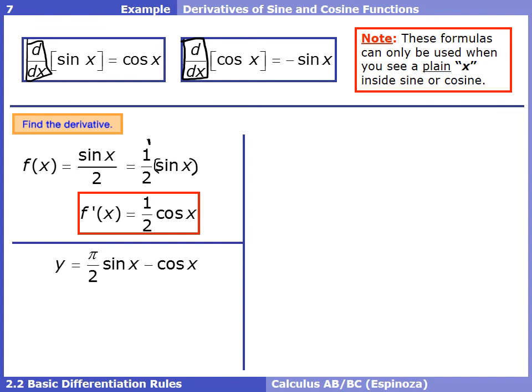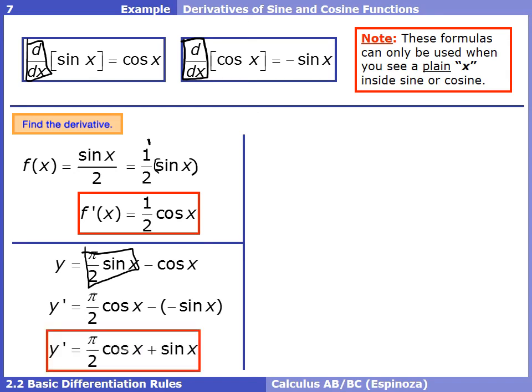For (π/2)sine x minus cosine x, we use both the sum/difference rule and the constant multiple rule. The derivative of (π/2)sine x is (π/2)cosine x — leaving the constant in front. For the minus cosine x term: the derivative of cosine is negative sine, and we're subtracting it, so we get minus negative sine x, which simplifies to plus sine x. So y prime equals (π/2)cosine x plus sine x.